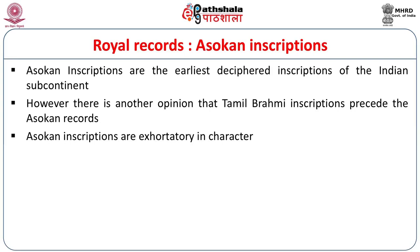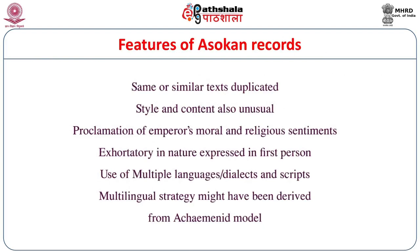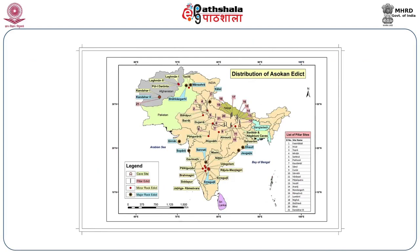The Ashokan inscriptions are exhortatory in character — royal orders given by Ashoka with a typical character. These are royal proclamations, and the same inscription has been found from different sites in different recensions, so the same context is repeated at different sites. The emperor's proclamation of moral and religious statements is found in these. The exhortatory nature is expressed in first person. Use of multiple languages, dialects, and even multiple scripts is a unique feature. The multilingual strategy might have been derived from the Achaemenid model.